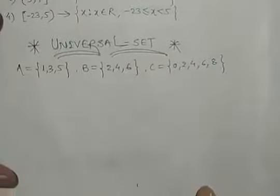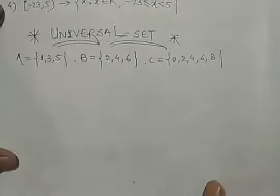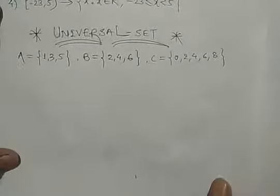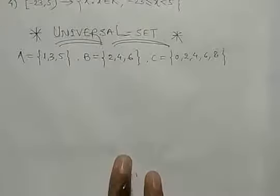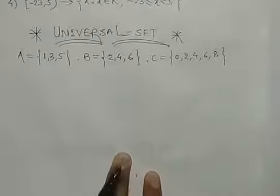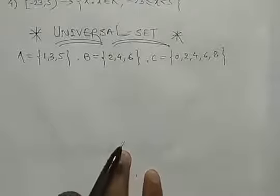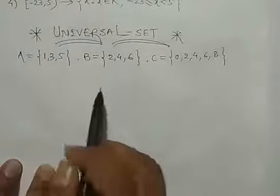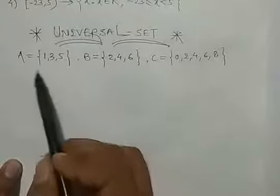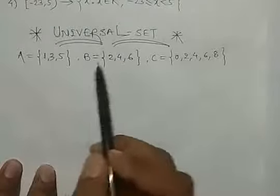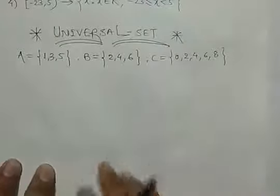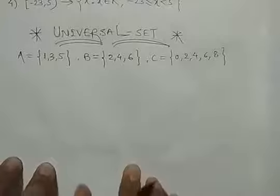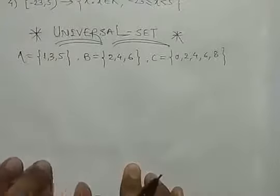अब बात करते हैं universal set की. Universal set क्या होता है — कोई भी आपको sets दिये हुए हैं, उन सभी sets का universal set वो set होता है जिसमें इन सभी sets के elements include होते हैं. Means A, B और C जिस set के subsets हों, उस set को universal set कहते हैं.